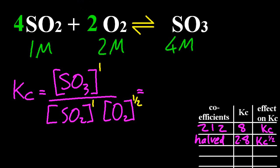Let me double the coefficients now from what they were originally. Put in my numbers again, and remember 1M, 2M, and 4M—they are unchanging. That's the equilibrium concentrations.